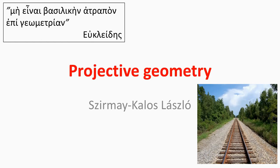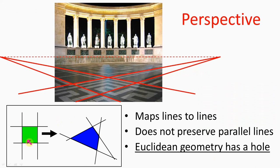Euclidean geometry is not really appropriate to discuss perspective formally. Therefore we throw Euclidean geometry into the garbage can and choose another geometry called projective geometry. Affine transformations map lines to lines and parallel lines remain parallel after the transformation, so an affine transformation is not able to convert a square into a general quad, because such a transformation would map two parallel lines to intersecting ones.